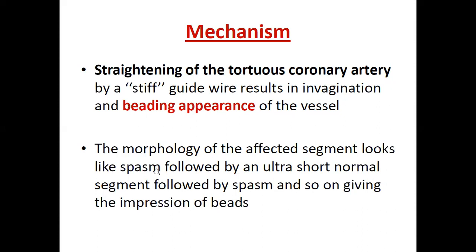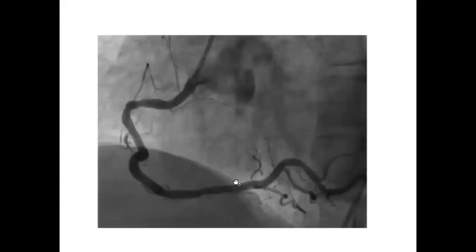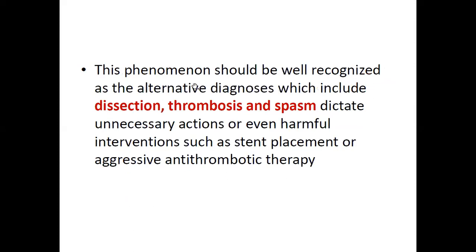The morphology of the affected segment looks like spasm, followed by an ultra-short normal segment, followed by spasm — creating a beaded appearance. This phenomenon should be well recognized and differentiated from alternative diagnoses like dissection, thrombosis, and spasm. The key difference is that the concertina effect disappears once you remove the wire; the tortuosity regains normally and the lesion disappears automatically. Dissection, thrombosis, and spasm will not disappear without further intervention.